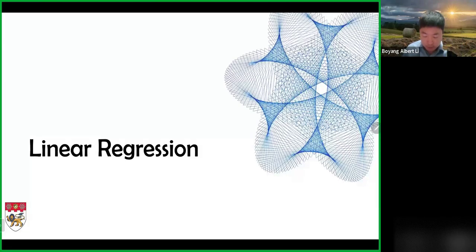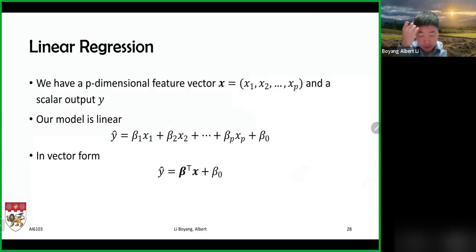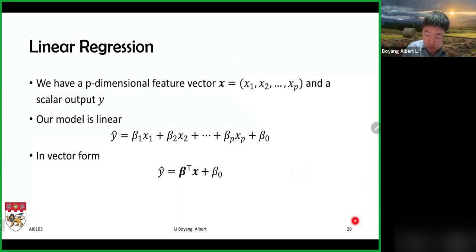We're going to talk about linear regression. The first thing is the linear regression model. We have a feature vector as our input — typically we refer to the input as a feature vector — and we assume that the feature vector has p dimensions, so it's a column vector from 1 to p. The output we assume is a scalar y. The model we are trying to learn is completely linear, in the sense that it can be represented as a straight line, or it is linear in the parameters.